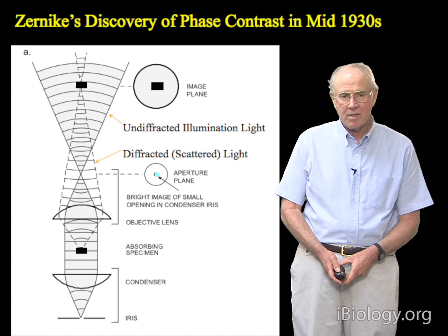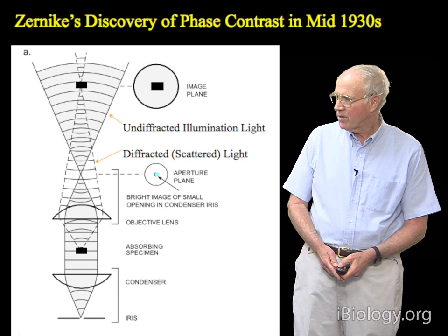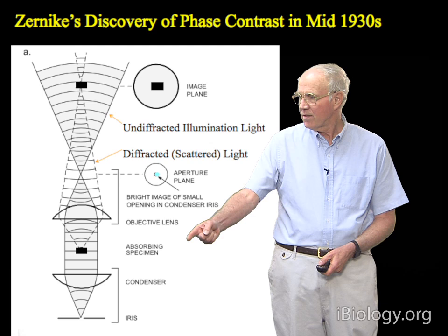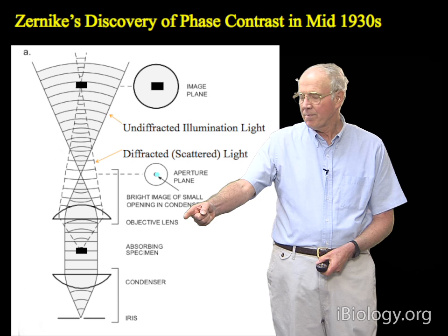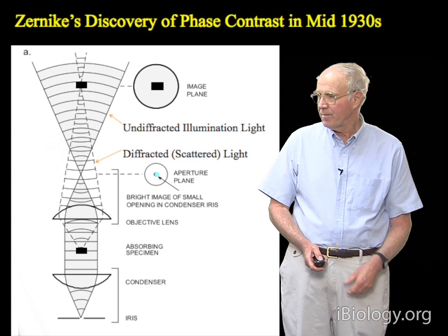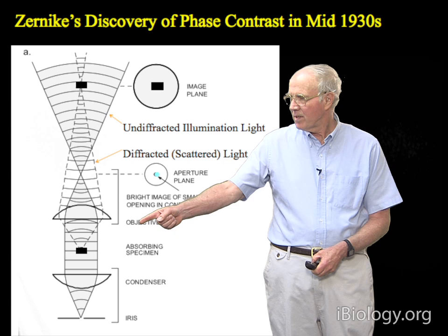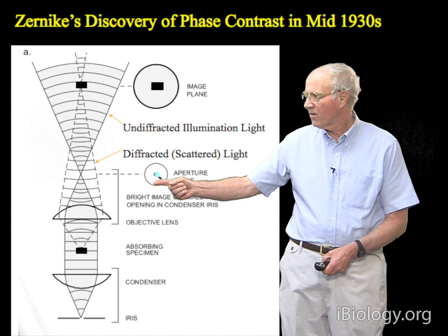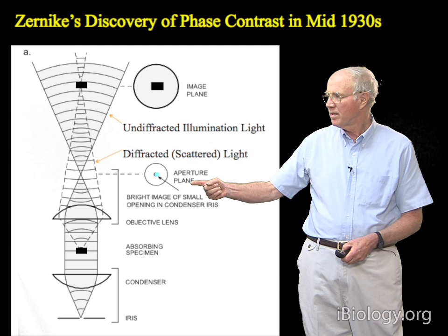The setup of the microscope he used in these experiments is shown in the diagram here. It's set up for Köhler illumination with the following adjustments: the iris diaphragm on the condenser is closed down to a very small spot, and as a result, that illuminates through the condenser and produces a beam of plane wave illumination of the specimen. The specimen he initially used was very fine carbon particles sprinkled on the surface of a coverslip mounted onto a glass slide. When the plane wave hits these fine carbon particles, a lot of the illuminating light just passes by and is collected by the objective lens, then becomes focused at the objective back focal plane — also called the back aperture — as a point.